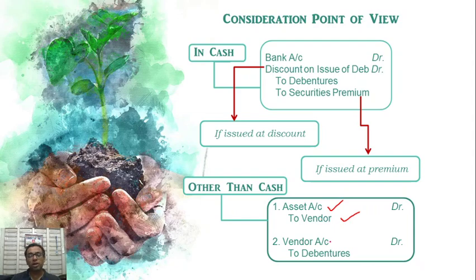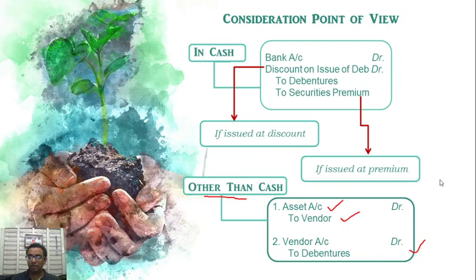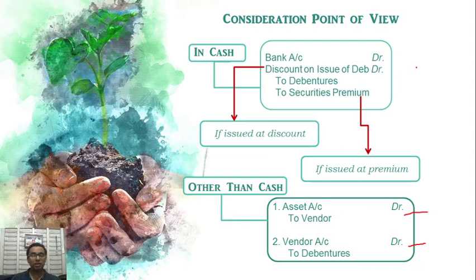For vendor payment, you enter cash and bank account, then vendor account, to Bank. Under consideration other than cash, the account entry is: Vendor account Dr., to Debentures — same as the treatment done in share capital for consideration other than cash.